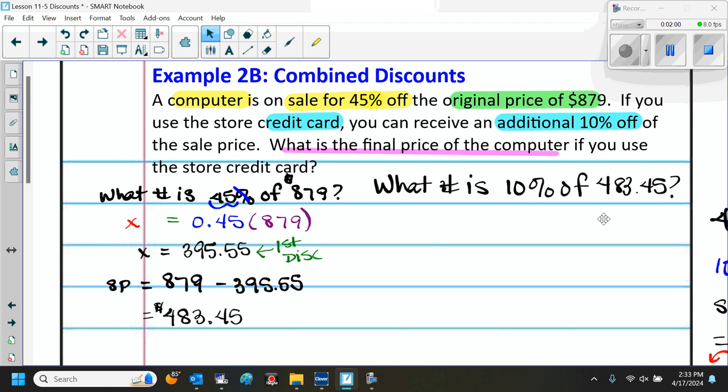Or we can say, remember we had that shortcut where we can just move that decimal to the left one, and that's going to give me 10%. So 10%, I'm going to put all the numbers there, is 48.345.